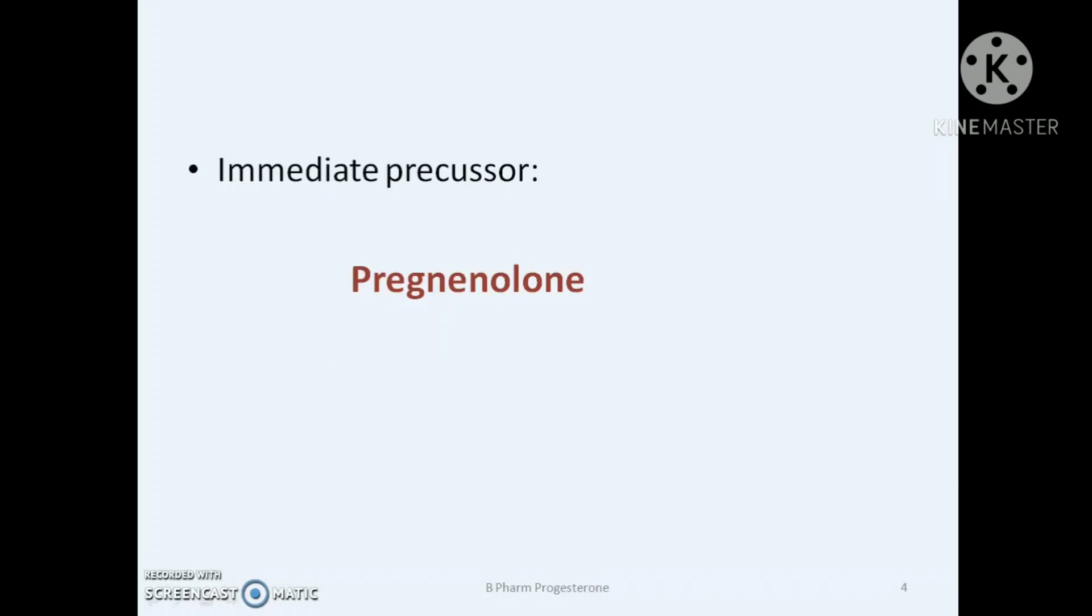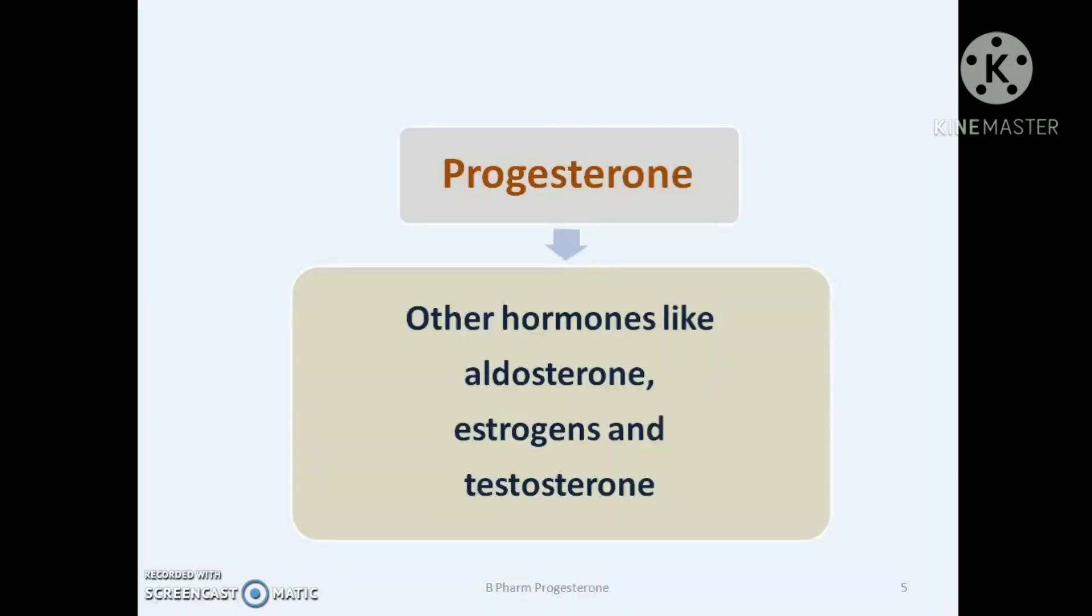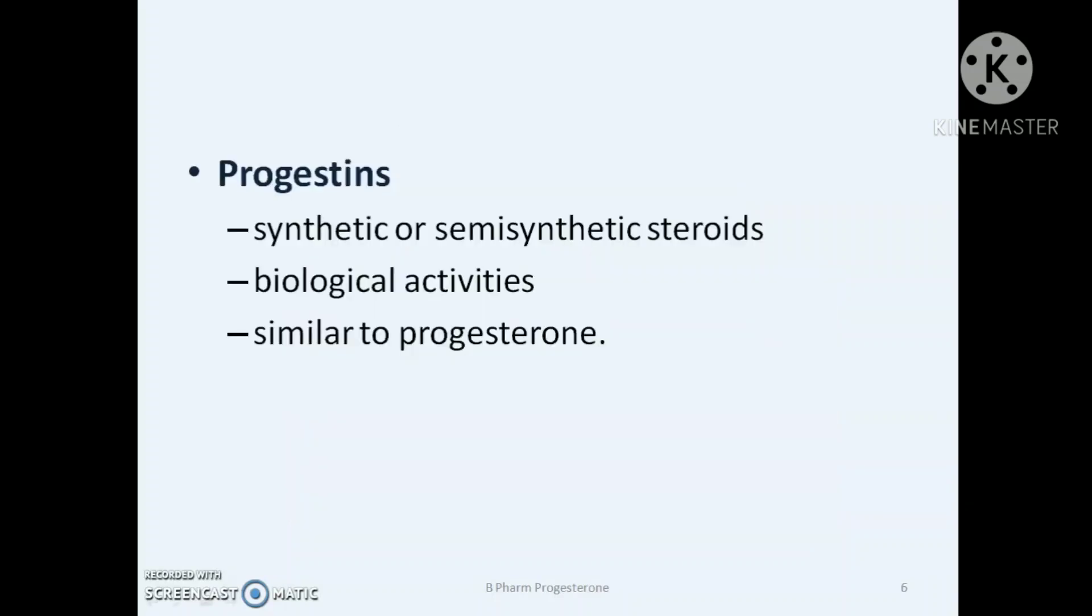In the biosynthetic pathway, all these sex hormones are formed from cholesterol and the immediate precursor of progesterone is pregnenolone. Most of the progesterone formed from pregnenolone gets converted to other sex hormones like aldosterone, testosterone, progesterone, and estrogen.